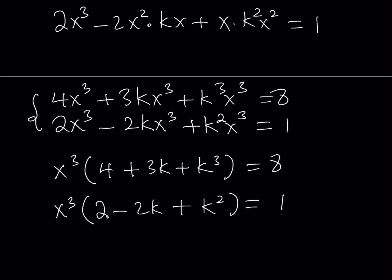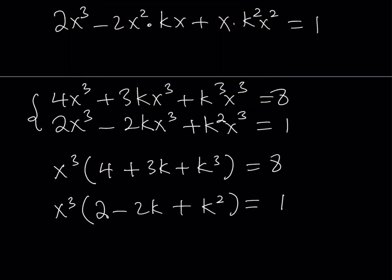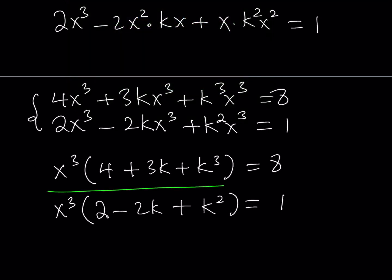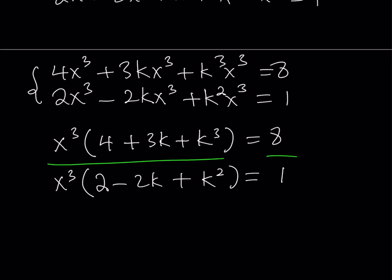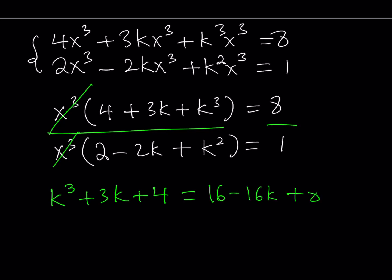If we divide both equations side by side, we can eliminate x³. This gives us a cubic equation. When we cross multiply, from the top we get k³ + 3k + 4, and the bottom gives us 16 - 16k + 8k².